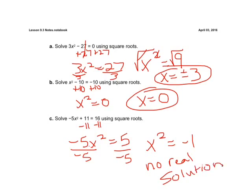So there's our kind of three types of examples. When d is positive, we're going to have two answers. When d is 0, we have one answer and that answer is 0. And when our d is negative, like right here, we have no real solutions.